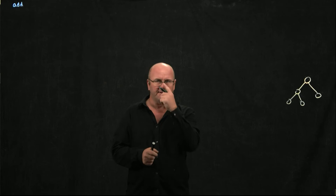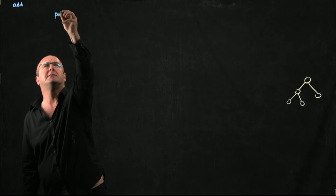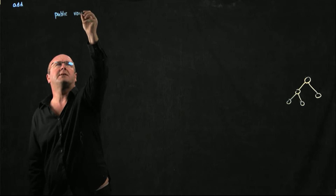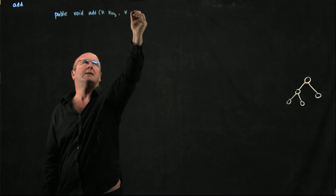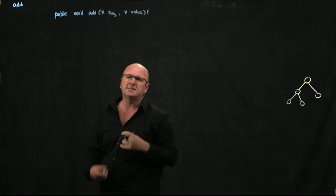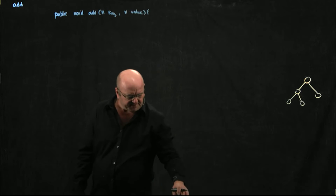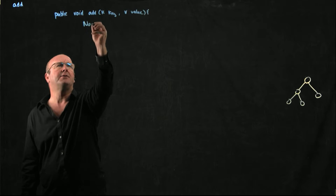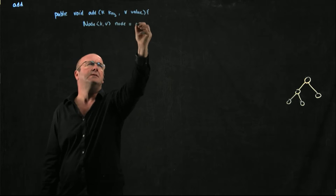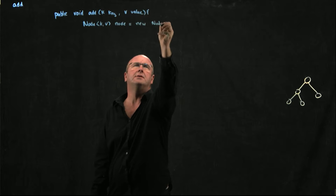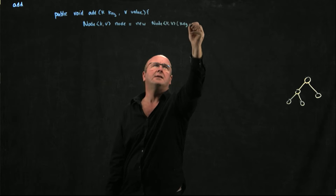Let's take a look at our add method for our red-black tree. First, we're going to have a public method — public void add — taking a key K and a value V. This is the method that we're going to allow people to use to add stuff to our tree. The first thing we're going to do is create a node KV object, which is going to be a new node KV, and we're going to pass in the key and the value.